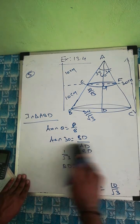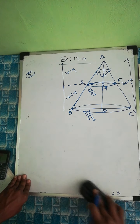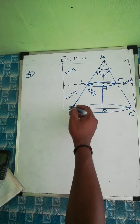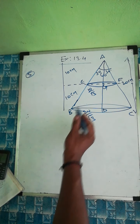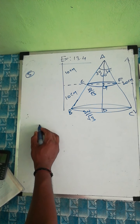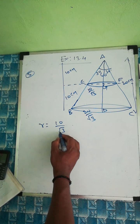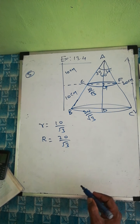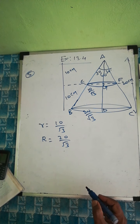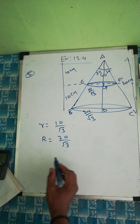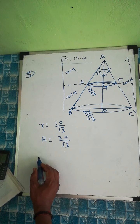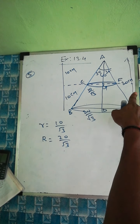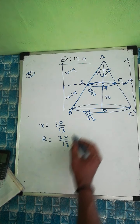Therefore, the radius of the upper end of the first term (frustum BCF) is r = 10/√3, and the radius of the lower end is capital R = 20/√3. The height h of the first term is 10 centimeters (not 20).